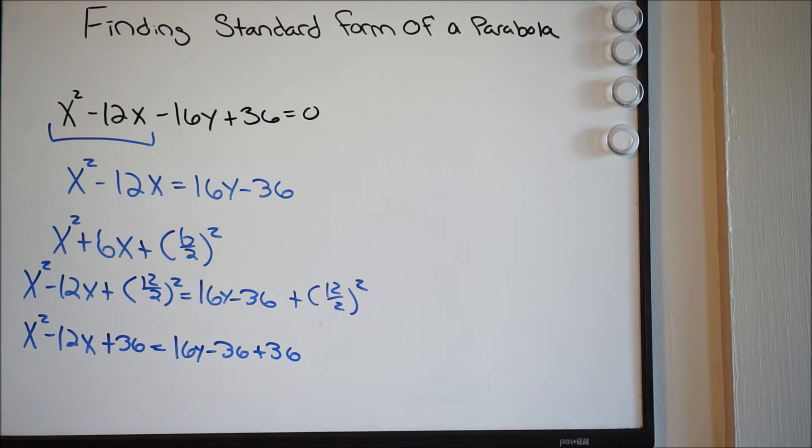So this works out pretty nice, negative 36 and positive 36. That cancels. This right here, we can actually factor. So why don't we go ahead and do that. So this is going to be x minus 6 squared, equal to 16y.